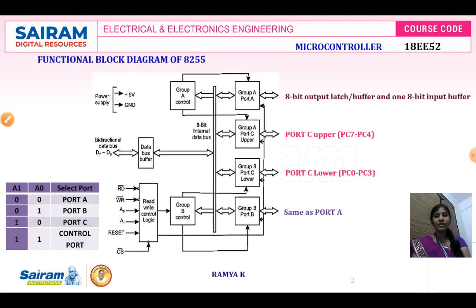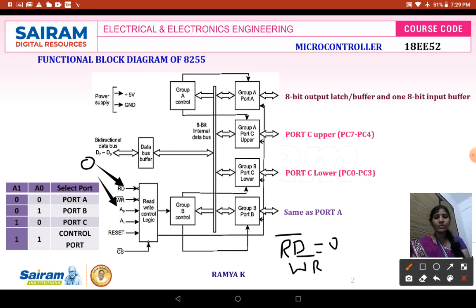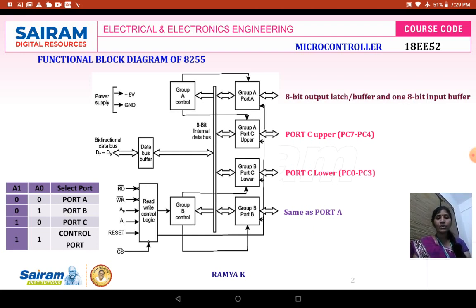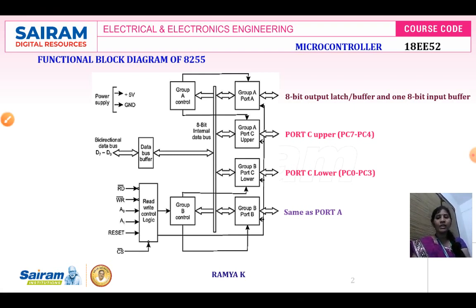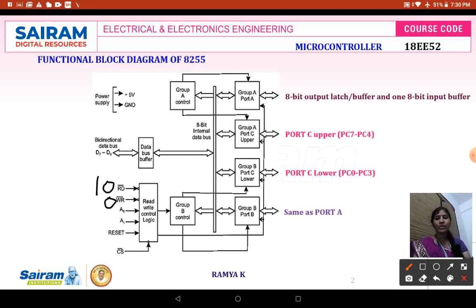The read signal is an active low signal, and the write signal is also an active low signal. When Read bar is 0, a read operation is performed and data is read from Port A to the data bus. If Read bar is 0 and Write bar is 1, a read operation is performed. If Write bar is 0 and Read bar is 1, a write operation is performed and data is written onto the data bus.